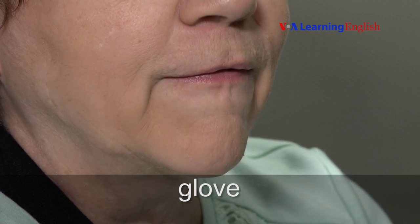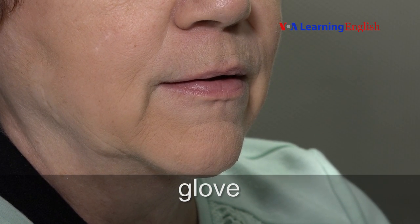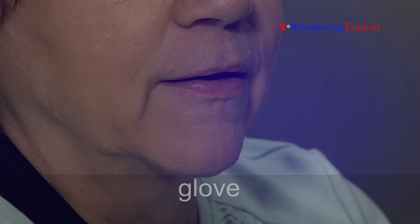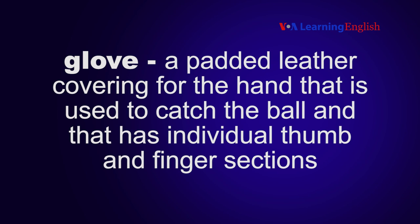GLOVE. A glove is a padded leather covering for the hand that is used to catch the ball and that has individual thumb and finger sections.